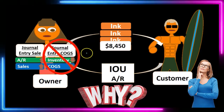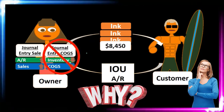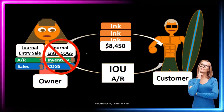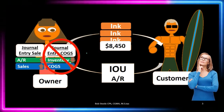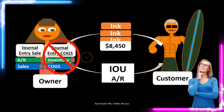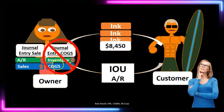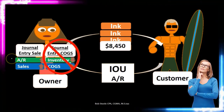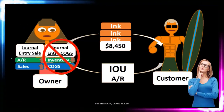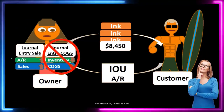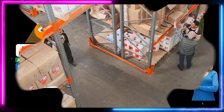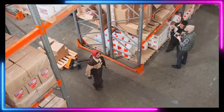Why? Because we may not even know this information — it might be more complicated to record the related cost of goods sold and the inventory reduction at that moment. Our system would know the sales price at the point of sale, but it may be easier to not do this second journal entry and instead plan to do it based on a physical count at the end of the day, week, or month.